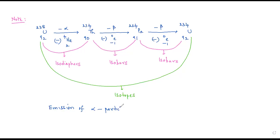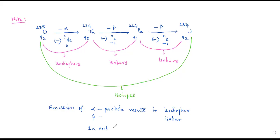Emission of an alpha particle results in an isodiaphore. Emission of a beta particle results in an isobar. Emission of one alpha and two beta particles in succession results in an isotope.